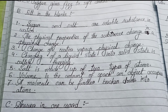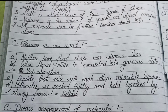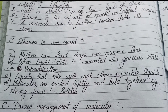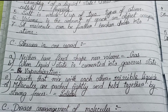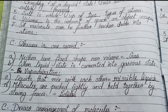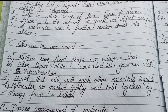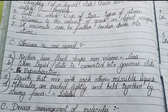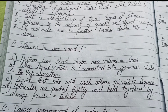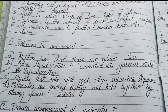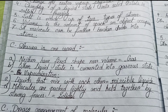Number 6: Volume is the amount of space an object occupies. Number 7: A molecule can be further broken down into atoms. Next, Part C — One word answers. (a) Neither have fixed shape nor volume — Gas. (b) When liquid state is converted into gaseous state — Vaporization. (c) Liquids that mix with each other — Miscible liquids. (d) Molecules packed tightly and held together by strong forces — Solids.